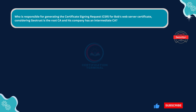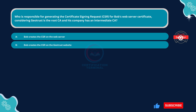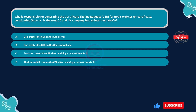Who is responsible for generating the certificate signing request for Bob's web server certificate, considering GeoTrust is the root CA and his company has an intermediate CA? Option A: Bob creates the CSR on the web server. Option B: Bob creates the CSR on the GeoTrust website. Option C: GeoTrust creates the CSR after receiving a request from Bob. Option D: The internal CA creates the CSR after receiving a request from Bob.